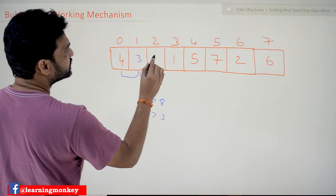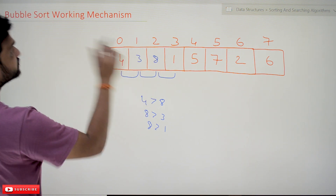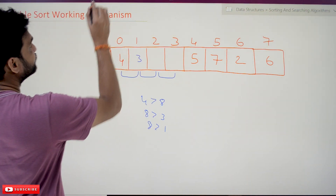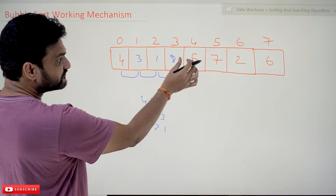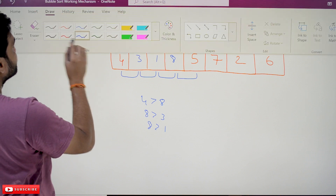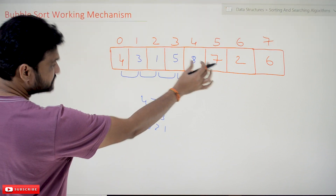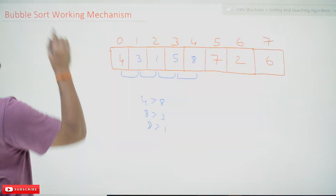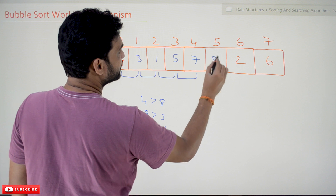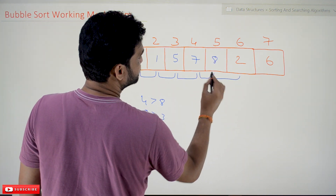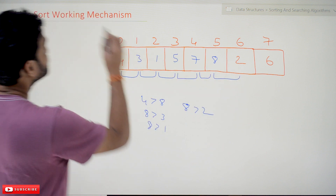After swapping 3 and 8, next 8 and 1 are compared — is 8 greater than 1? Yes, so we swap again. Then 8 and 5 are compared — is 8 greater than 5? Yes, so swapping is done again; 5 comes here and 8 moves forward. Then 8 and 7 are compared — 7 moves here and 8 comes here.